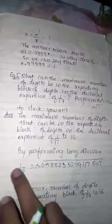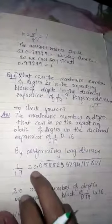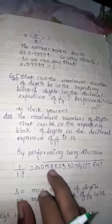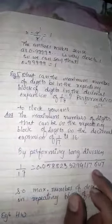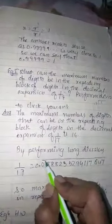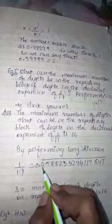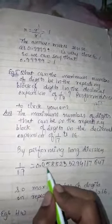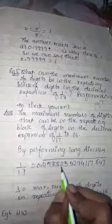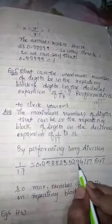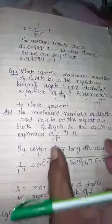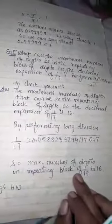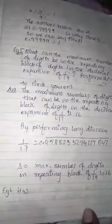You can verify by dividing: 1 divided by 17 gives 0.0588235294117647... Counting the repeating digits under the bar, there are exactly 16 digits. This confirms that the maximum number of digits in the repeating block of 1 upon 17 is 16.